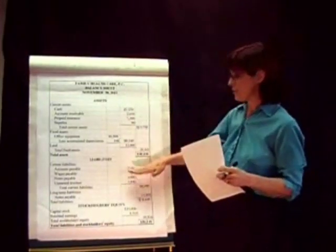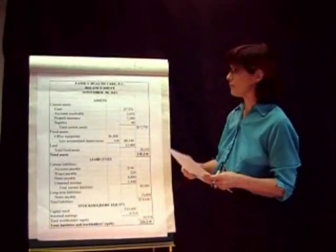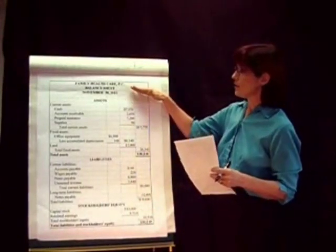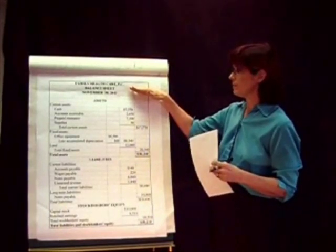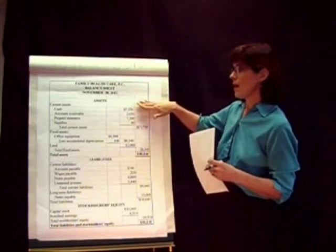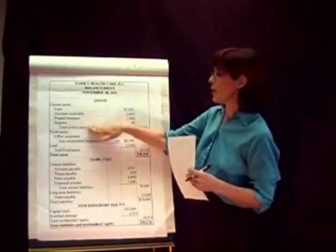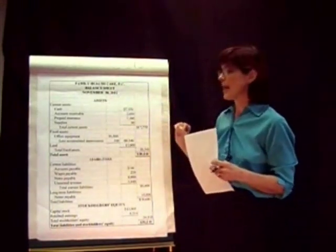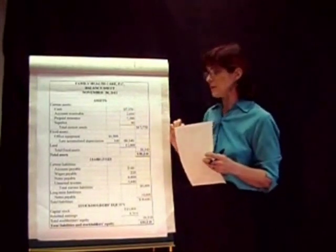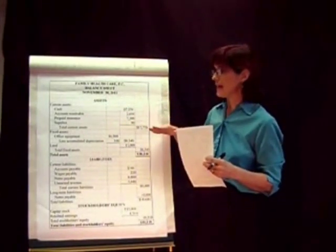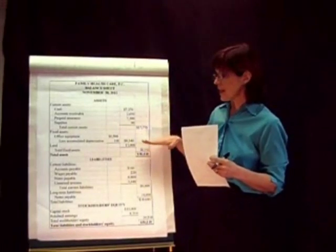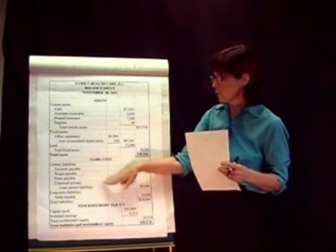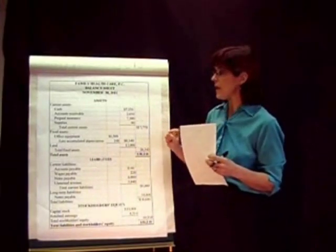The balance sheet is a reflection of the accounting equation: assets, liabilities, and stockholders' equity. This is a balance sheet for Family Health Care — a physician practice, a doctor's practice. One of the things that's different about the classified balance sheet is we have classified and grouped the assets: current assets, fixed assets, and current liabilities. That's why it's called a classified balance sheet.